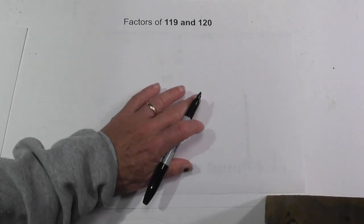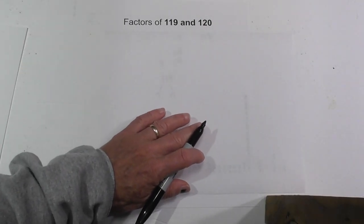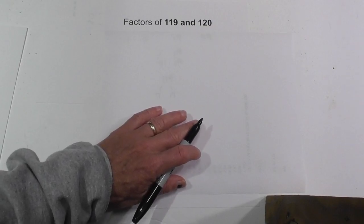Welcome to Moo Moo Math and Science and the factors of 119 and 120. They're both composite numbers, so let's get started.